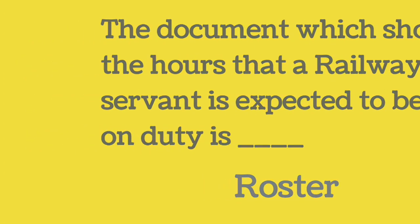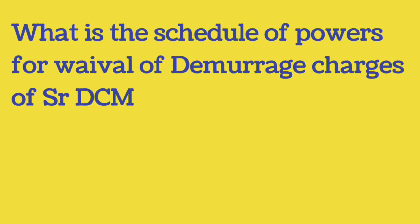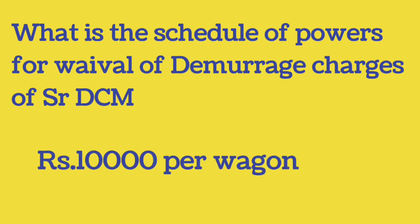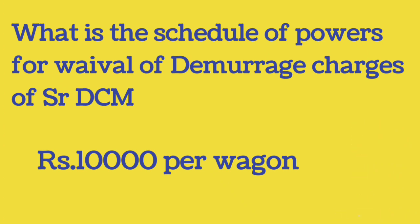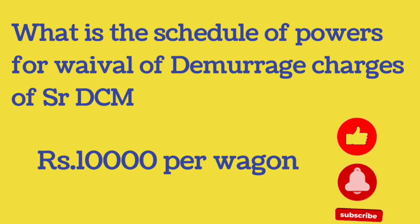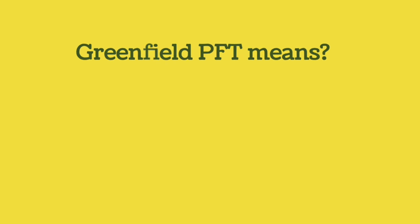What is the schedule of powers for waiver of demurrage charges for Senior DCM? The scheduled power for waiver of demurrage charges for Senior DCM is rupees 10,000 per wagon.